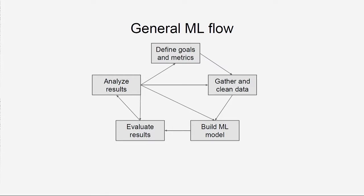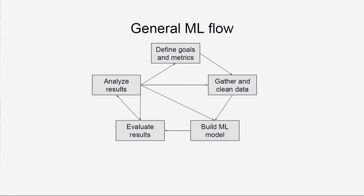First, what is the typical machine learning development cycle? You want to do something — you want to be the next Google. You decide on some metrics you want to use in order to see how good you are. Then you gather some data, clean it, build your machine learning model, evaluate the results, and you get a number.